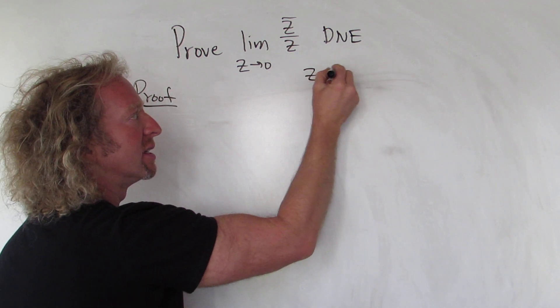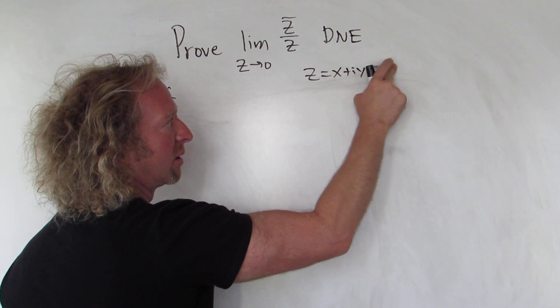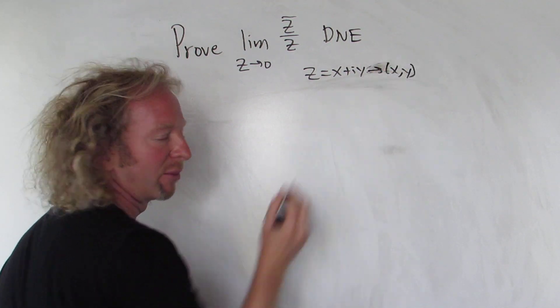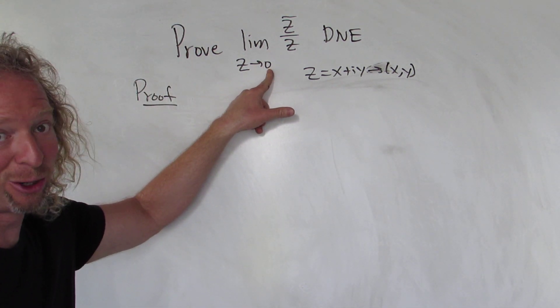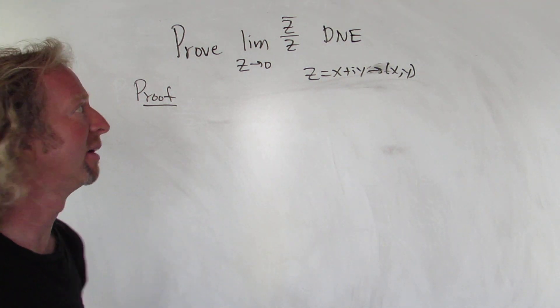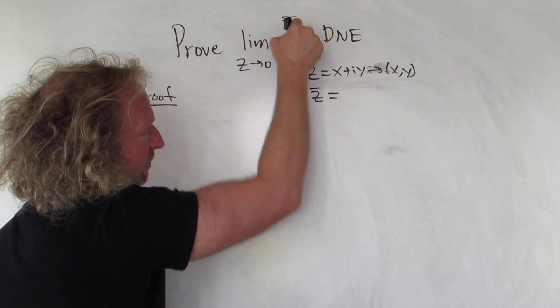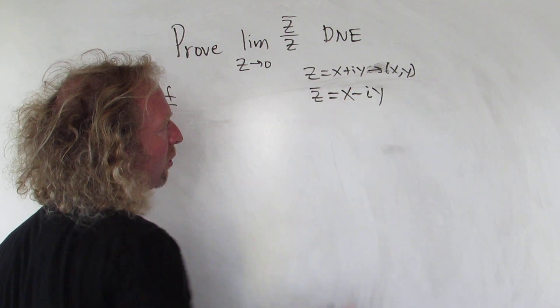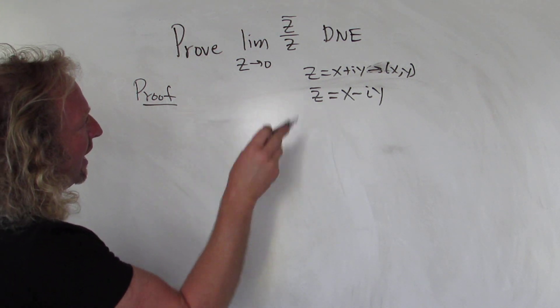So you can think of z as x plus iy. You can also think of it as an ordered pair, so I'll put a little arrow here, x comma y, in the complex plane. Zero here you can think of as zero plus zero i, or just (0,0) as an ordered pair. And this symbol here, z-bar, you can think of this as x minus iy.